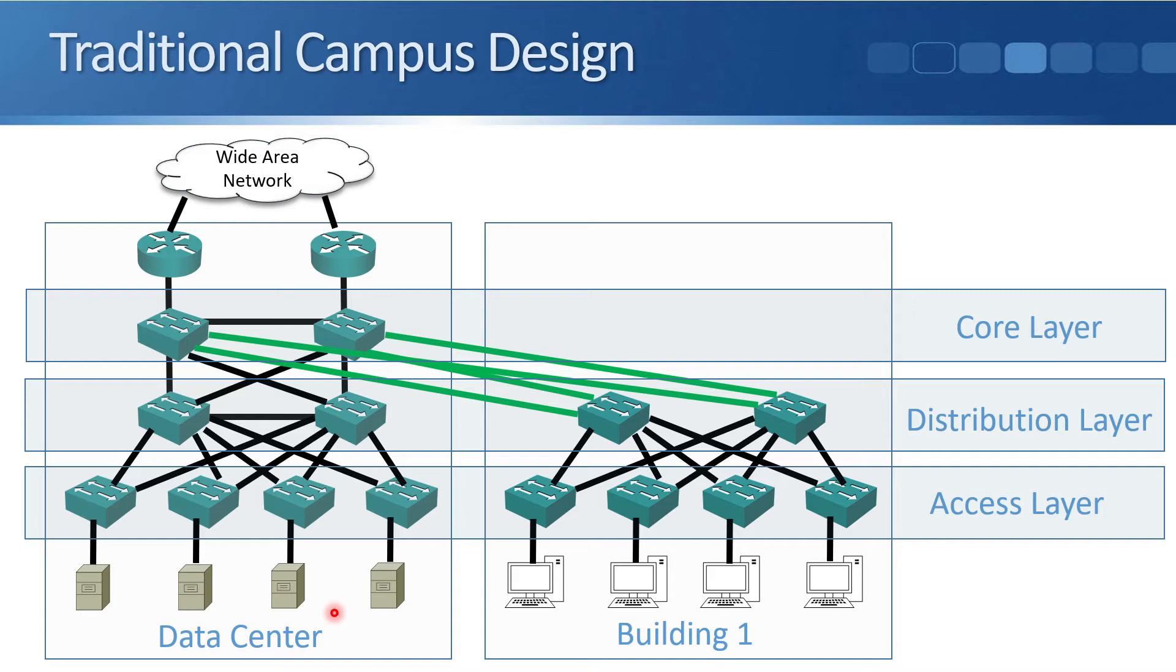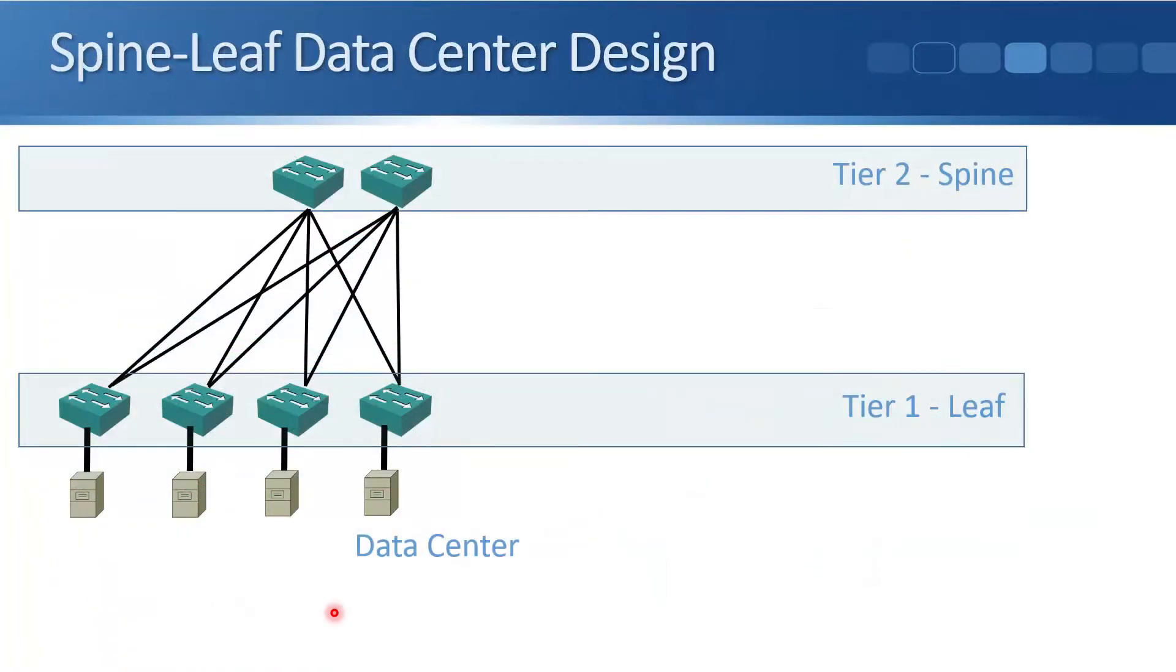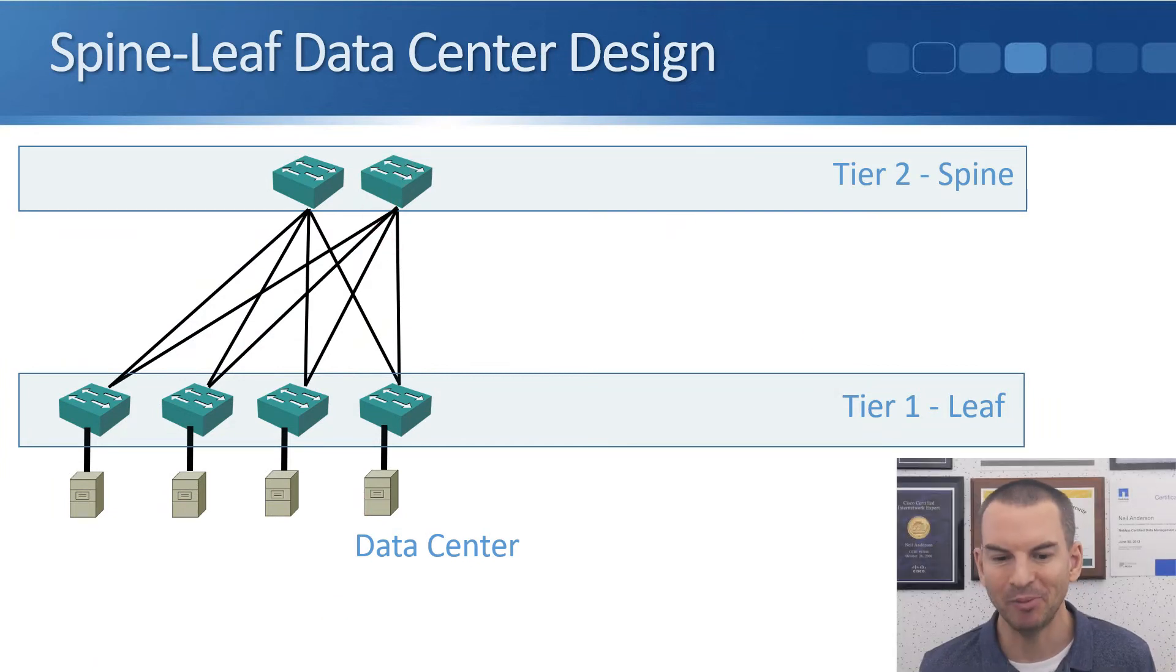As I said, in modern data centers you do have a lot of east and west flowing traffic. So because of that there is another network design that's very popular in data centers now and that is the Spine-Leaf data center design. Now you're probably looking at this now and thinking, wait a minute Neil, that looks pretty much exactly the same as a collapsed core and distribution layer with the traditional model. And yes, right now it does.